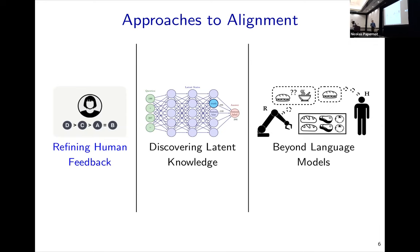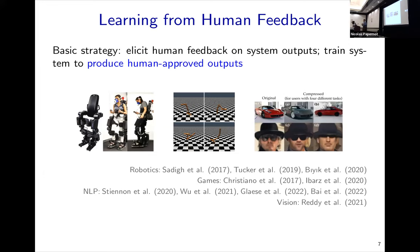Let's talk about refining human feedback. This is a very ubiquitous strategy used across many domains. The basic idea is to look at the outputs a system generates, elicit human feedback on those outputs, and train the system to produce human-approved outputs — either via reinforcement learning or via imitation learning where we imitate human corrections. It's been used in robotics, game-playing, RL, natural language processing, and computer vision. Let me give an example of how this works in the language model domain. I'll show you input and output from GPT-3, a large language model not trained with human feedback — just trained to predict the next token.